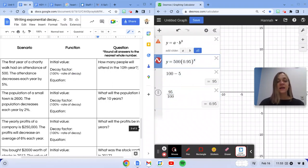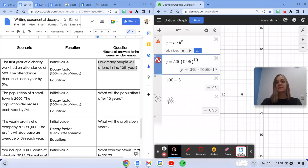How many people will attend the 10th year? We know that 10 years is time. We know that x is time. So I take out x, I put in 10. And if I'm rounding to the nearest whole number, this is going to be 299 people.